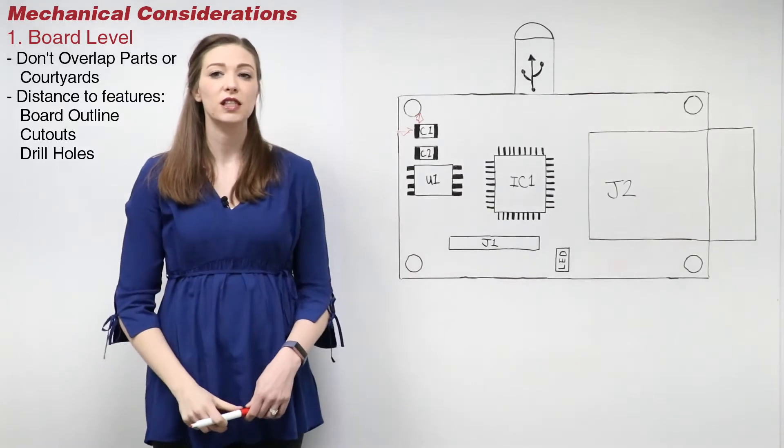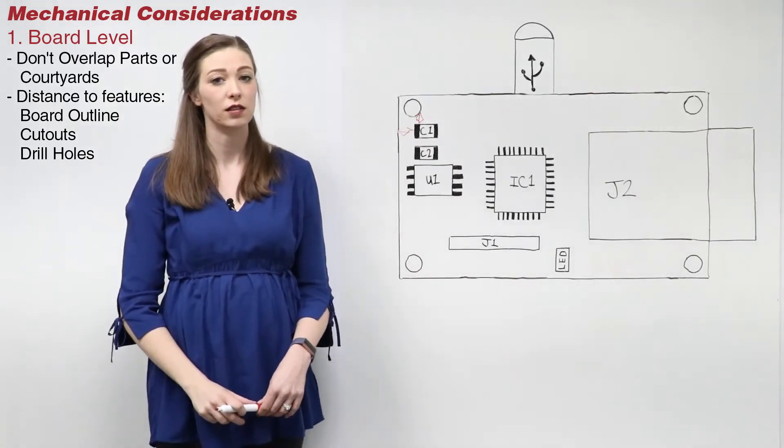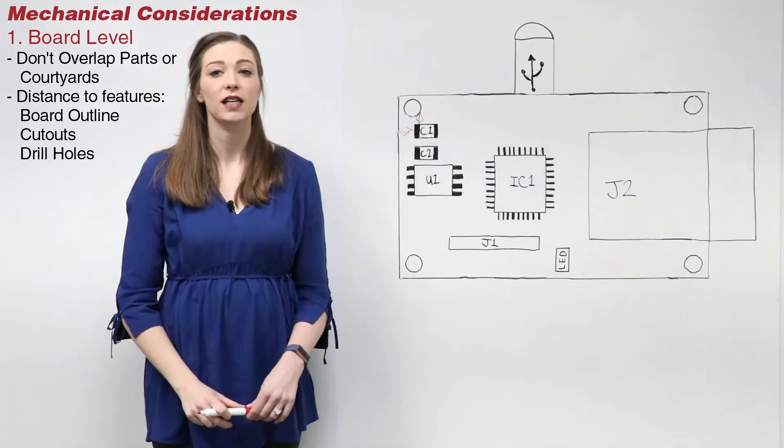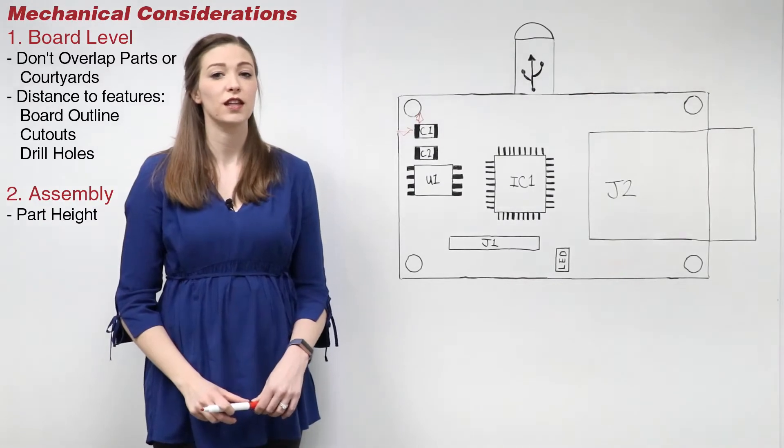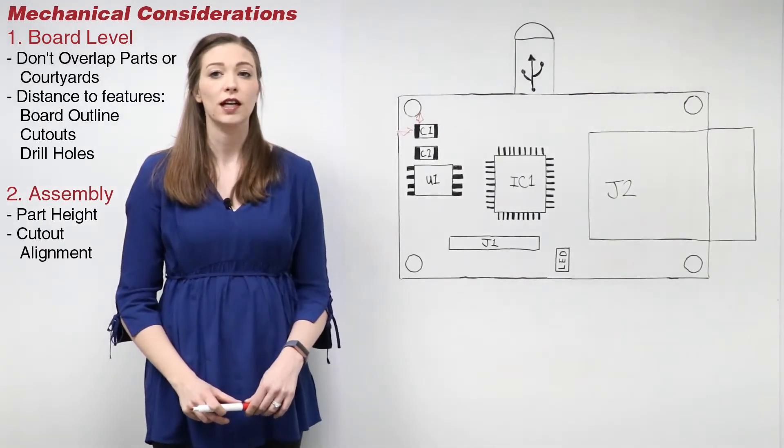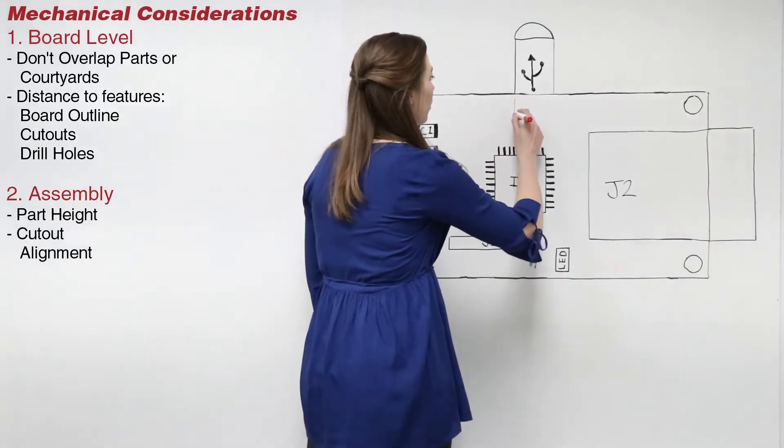Please note that some PCB software allows these distances to be set as mechanical constraints. The second aspect to consider is the assembly interference. Check heights of components to ensure they will fit in the enclosure. Ensure cutouts in the enclosure match up with any necessary connectors or components.